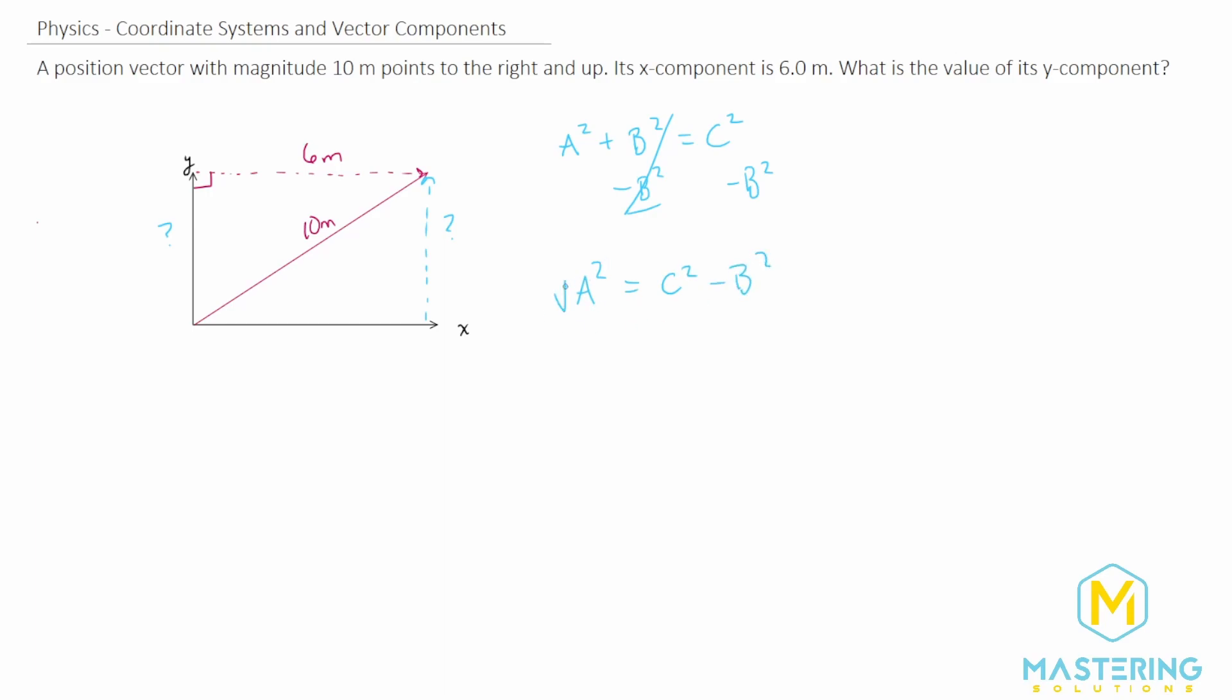We want to isolate a by taking the square root of both sides of the equation. So now a is equal to the square root of c squared minus b squared.